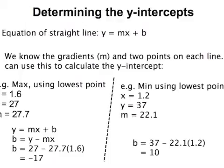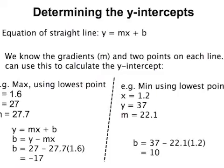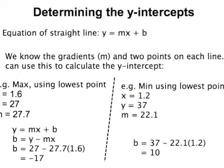When we substitute in the coordinates of the lowest point, as well as the slope for the max line, we end up with a y-intercept of negative 17. When we do the same for the minimum line, we end up with a y-intercept of 10.